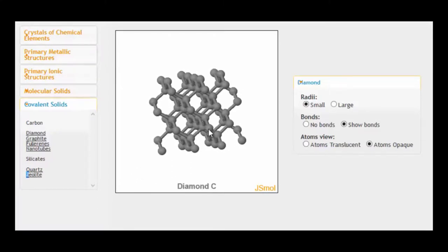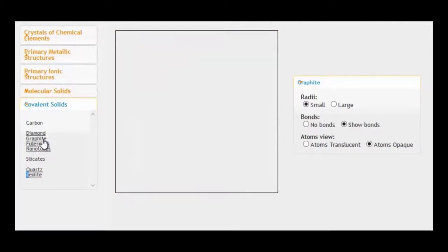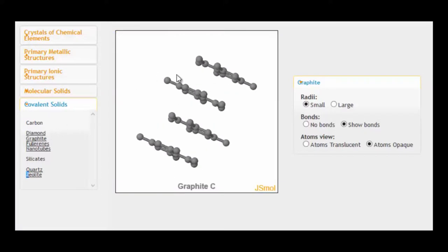And once again, the only thing that's limiting the size of this is the number of atoms that we've got. We could just keep on adding carbon atoms to the edge of this to make it bigger and bigger. We'd have a quick look at graphite as well. Here we go.